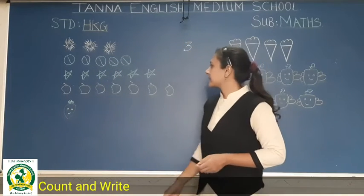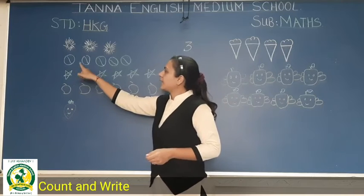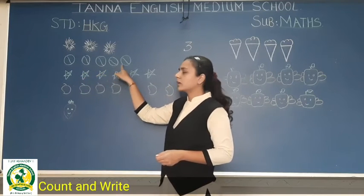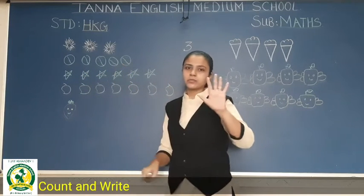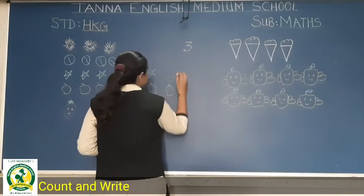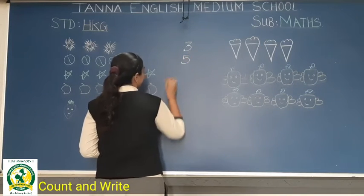Next, bowls. One, two, three, four, five. Five bowls. So right here, number five.